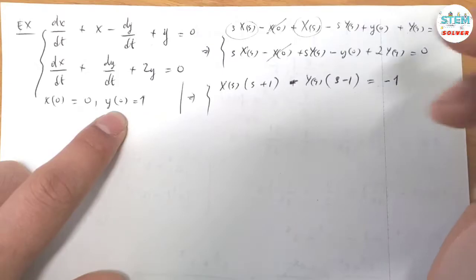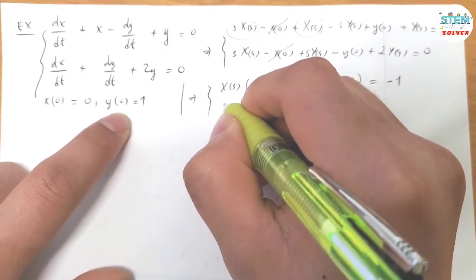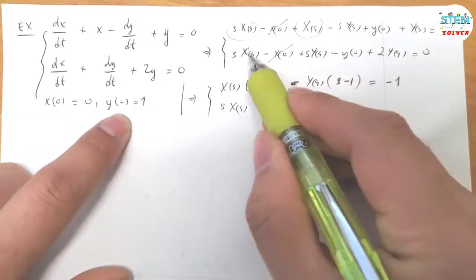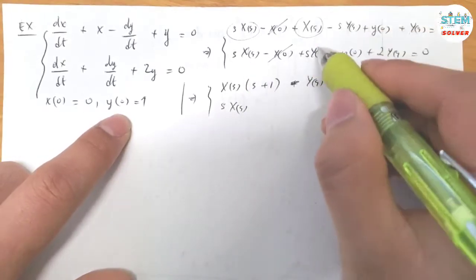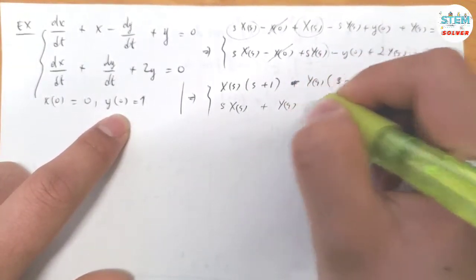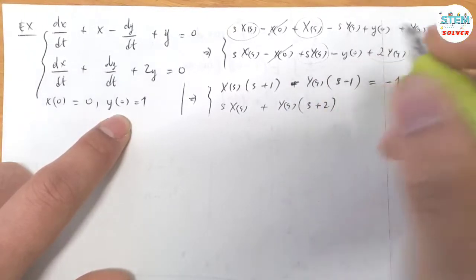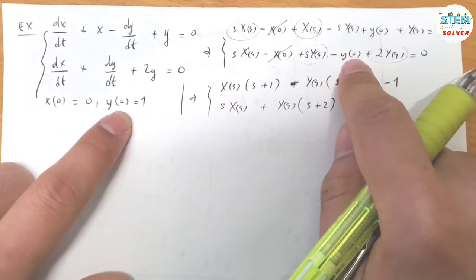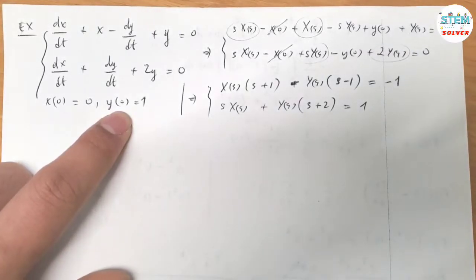And for this one, we are going to do the same thing. Just rewrite it because I have only one term. For this one, we have two terms. Factor capital Y(s). And I have S plus 2 in parentheses. Equals Y(0) equals 1, so I have positive 1.